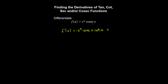And then we take the derivative of the first function, which is e to the x, and keep the second function constant. Now we can factor out e to the x by cosec(x), and for the second term we have 1, and the first term is minus cotangent of x.